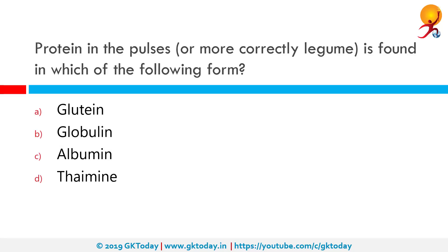Protein in pulses, or more correctly legumes, is found in which of the following form? The correct answer is albumin. Albumins are a family of globular proteins, the most common of which are the serum albumins.